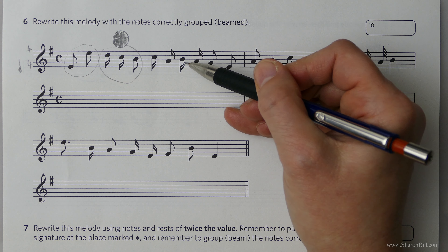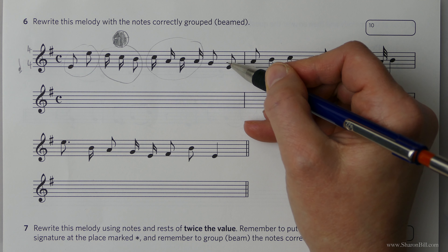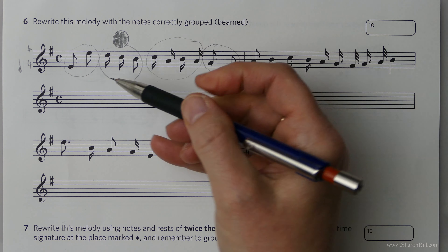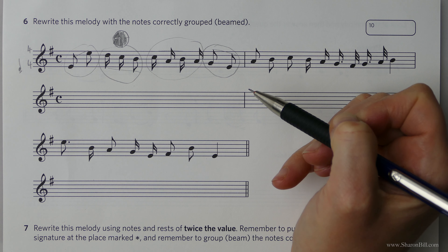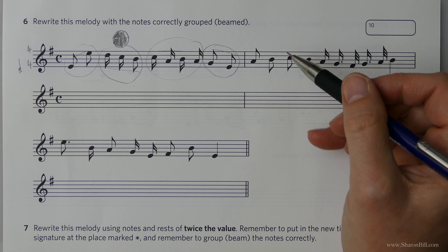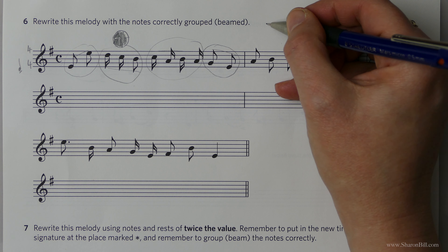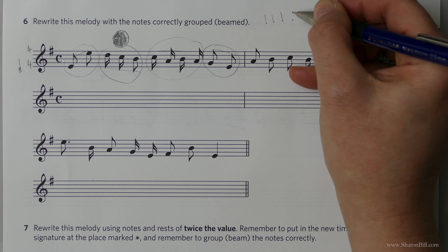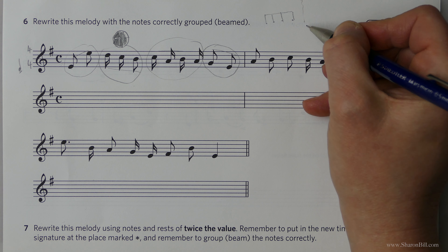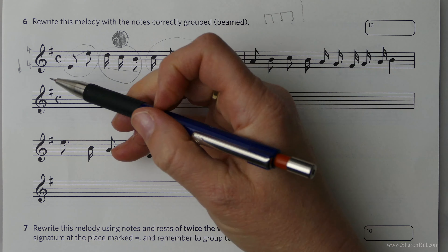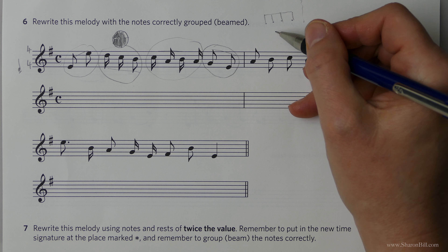Now here we have one, two, three, four quarters of a beat so there's our next beat, and then a half and a half of a beat give us beat four. So we're going to have to beam these literally as we've just circled them — we've done the thinking. There are exceptions to the rule: for example, you can beam four quavers or four eighth notes so long as they don't cross over the halfway point of the bar in this time signature. However, I don't think that's going to crop up, but it's worth just remembering just in case.